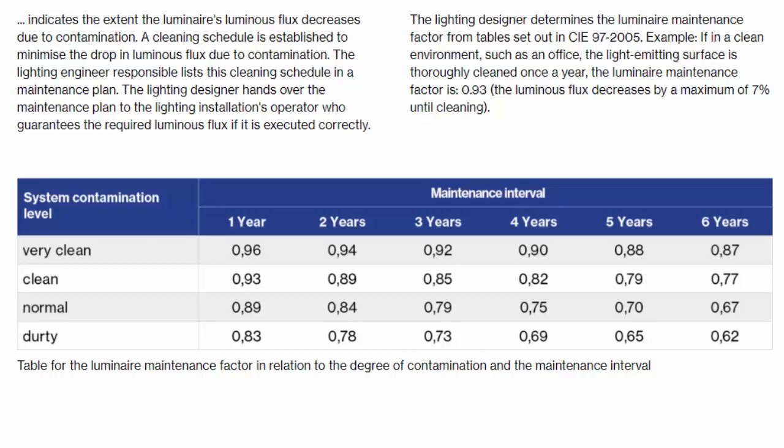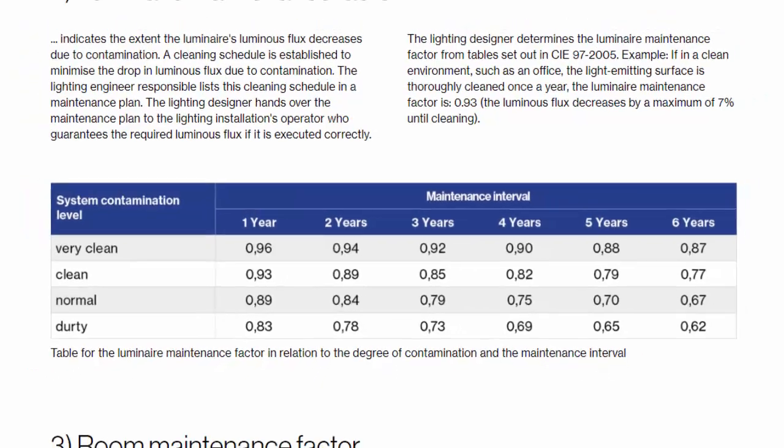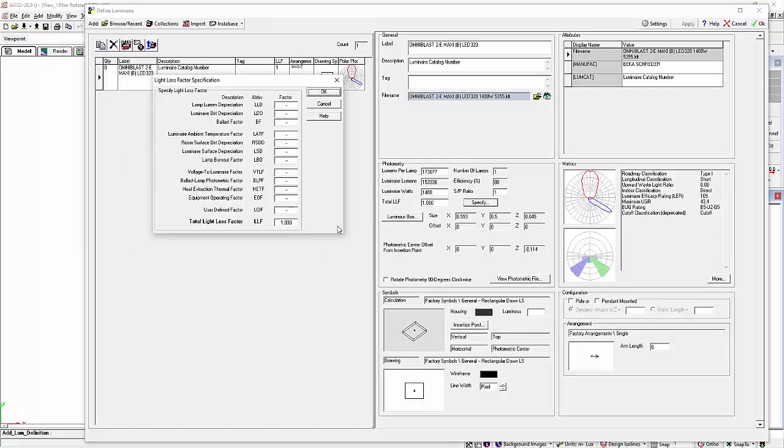Think of the maintenance factor as a safety net — it's your promise that the light output you designed will last long and remain consistent over time.